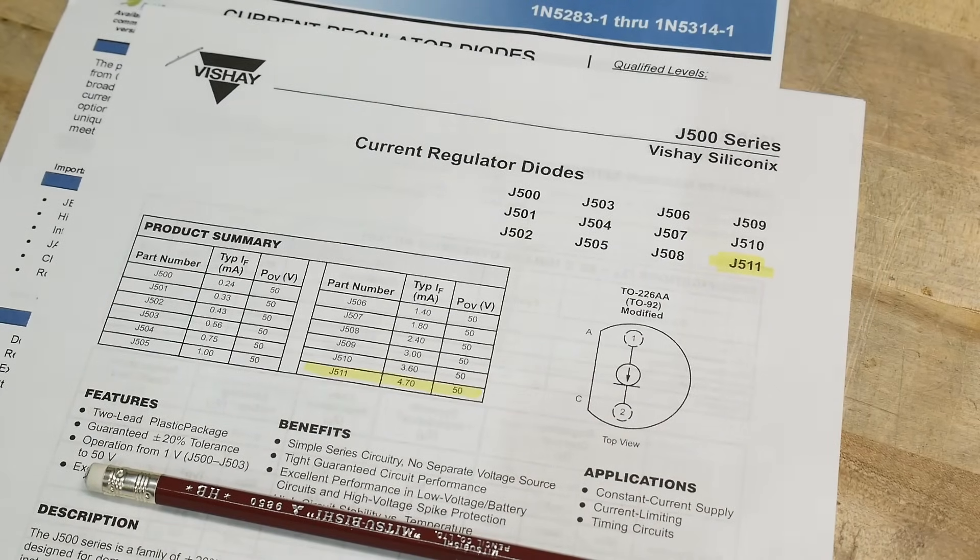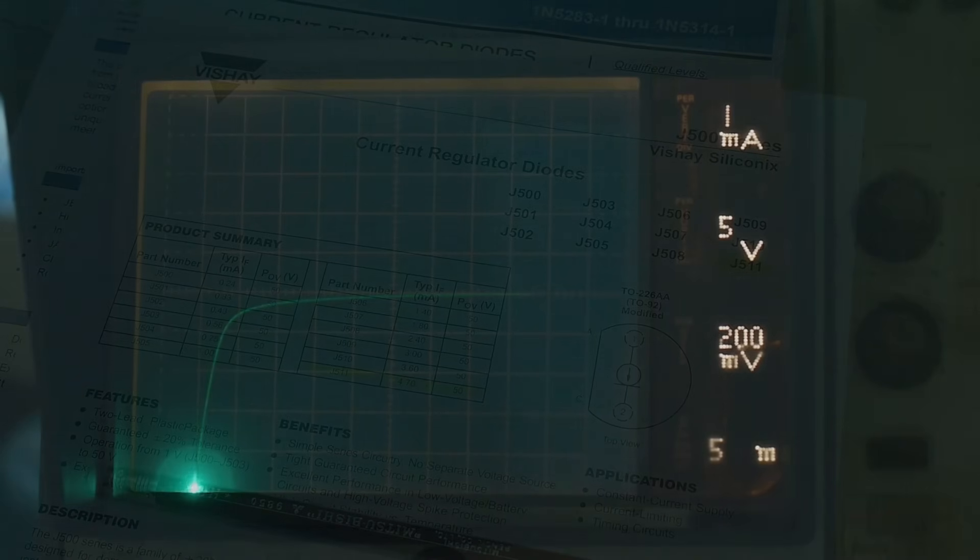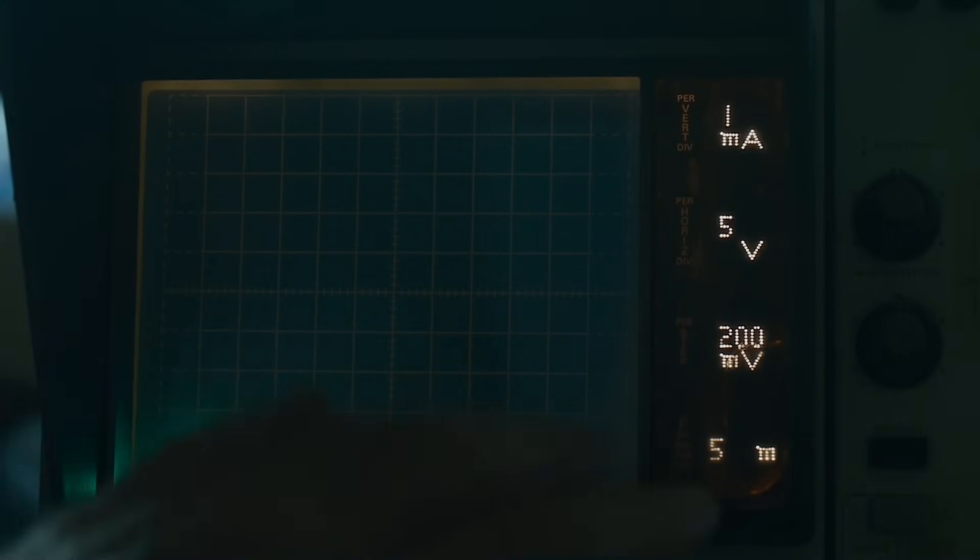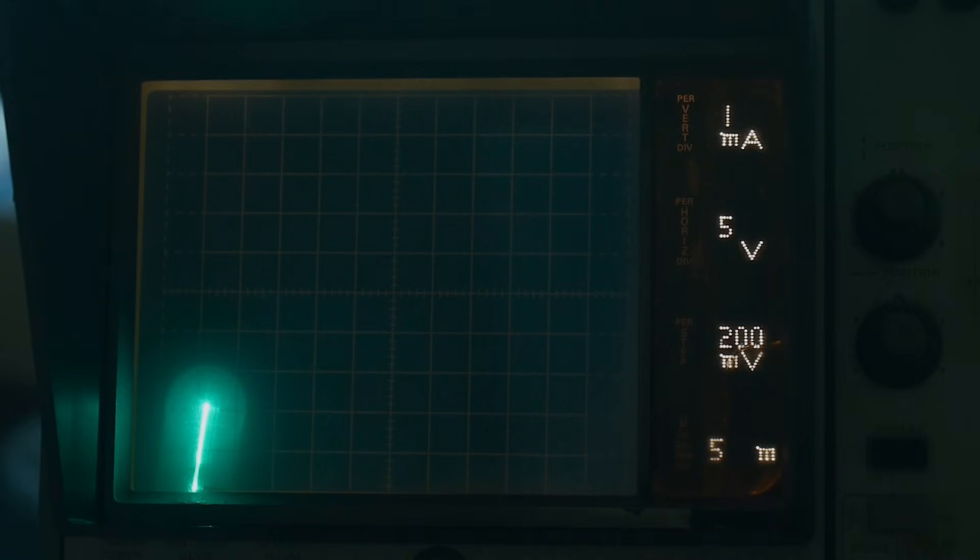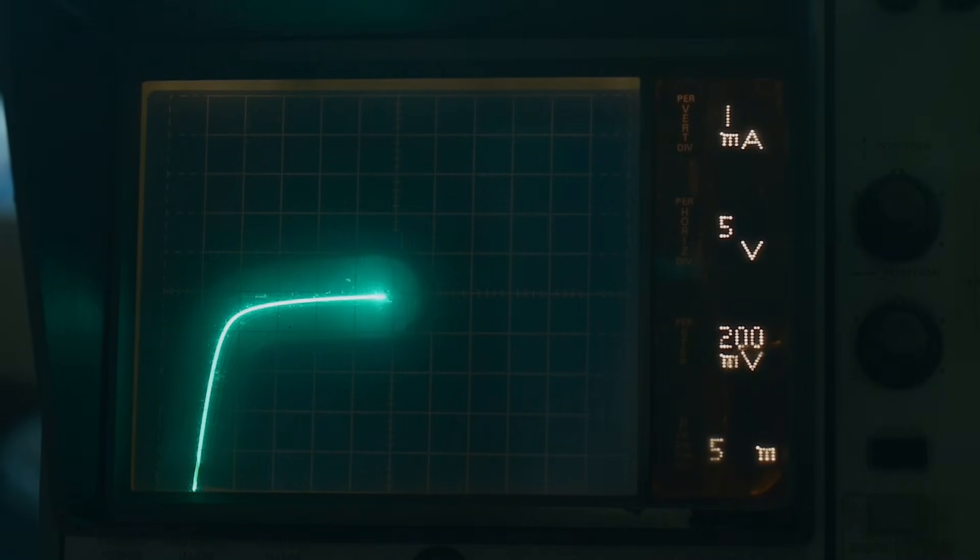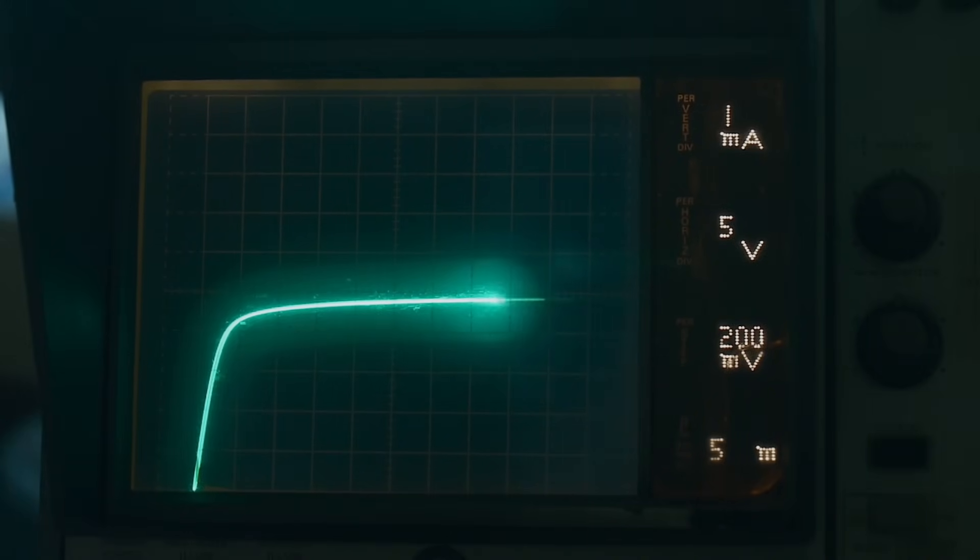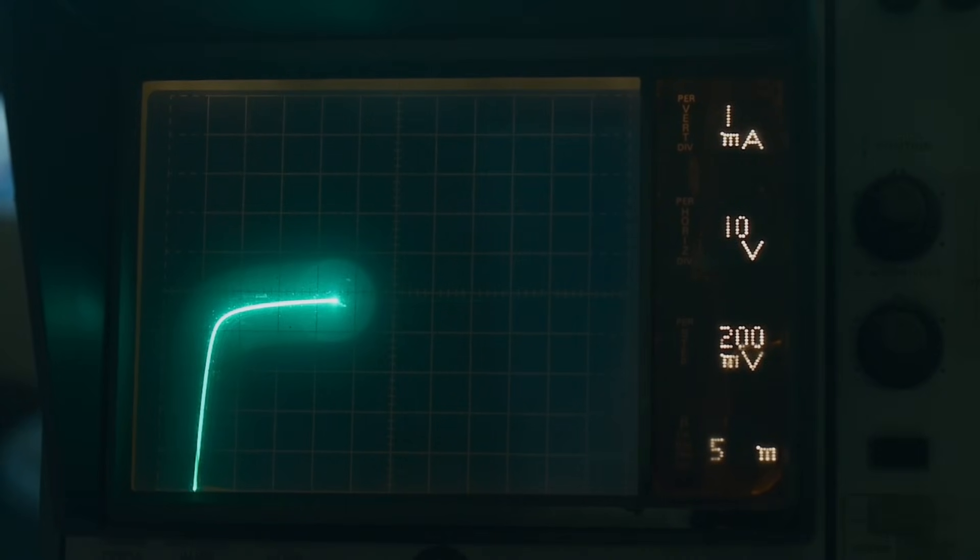Let's put it on a curve tracer and see what constant current diodes look like. We have our curve tracer set up at five volts per division horizontal and one milliamp vertical. Remember this is supposed to be 4.7 milliamps. So there's one milliamp, two milliamps, three milliamps, four milliamps, 4.7 milliamps, and it stays the same regardless of what voltage I have on it. It's just a flat line.